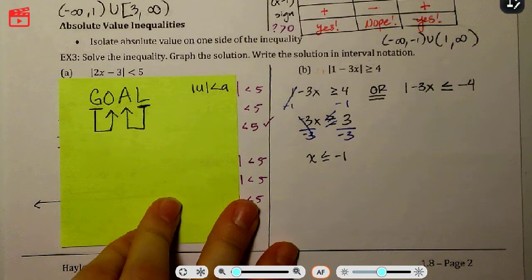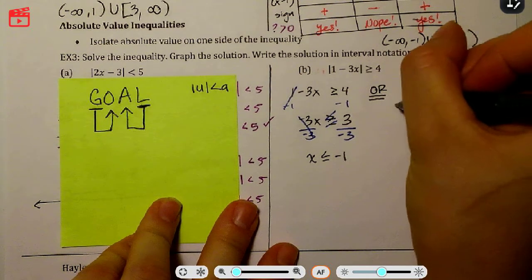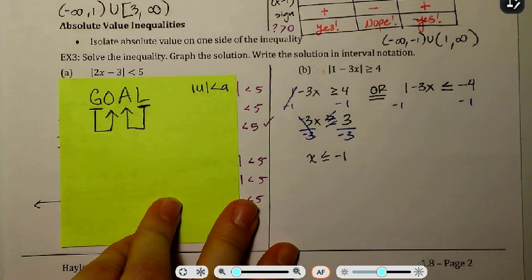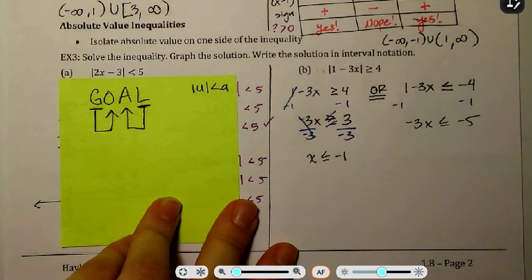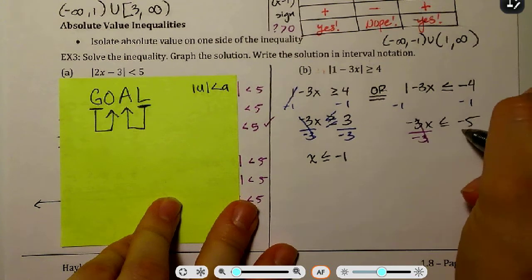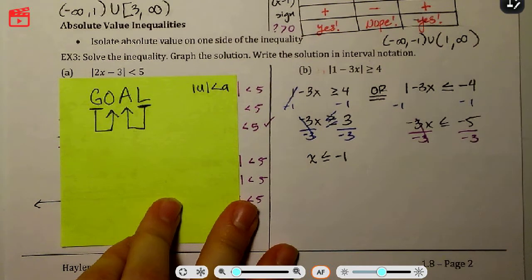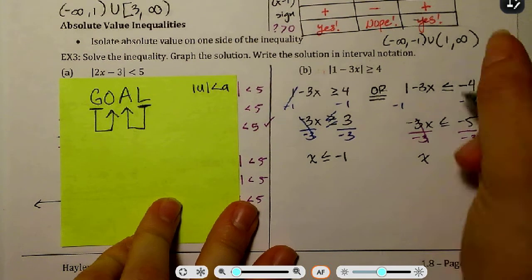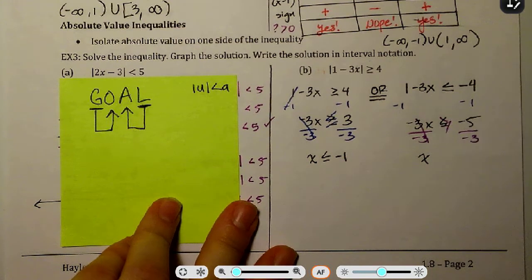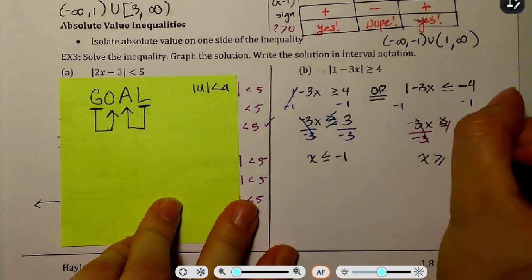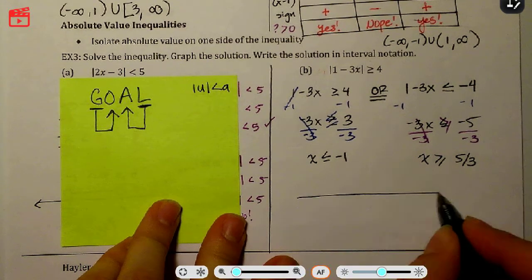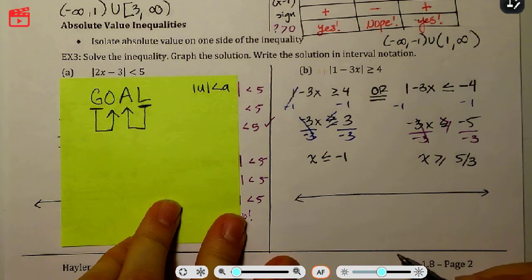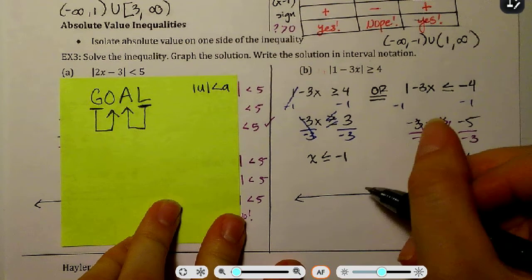All right. Solving for the next one. Let's go ahead and subtract from both sides. Oops. Used the wrong pen color there. Ooh, and we divided by a negative. I forgot to flip my sign. Okay. So let's go ahead and graph this.